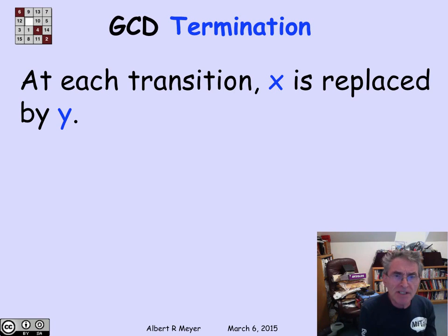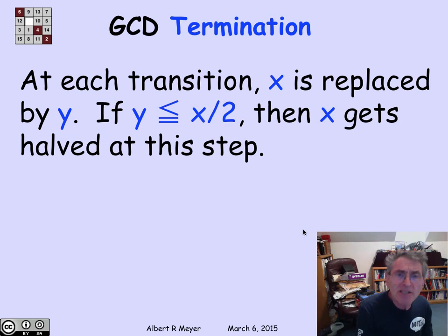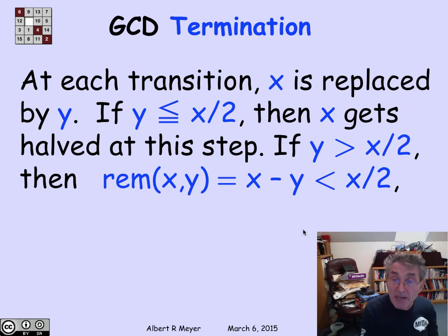Notice that at each transition, we're going to replace x by y and y by the remainder of x divided by y. Let's assume that x is the bigger one. So there's two cases. The first case is, suppose that y is less than or equal to x over 2. Since at this step you're going to replace x by y, it means that you're replacing x by something that's less than half x, so x gets halved at this step. What about if y is big? If y is bigger than x over 2, then the remainder of x divided by y is simply x minus y, and it's going to be less than x over 2.